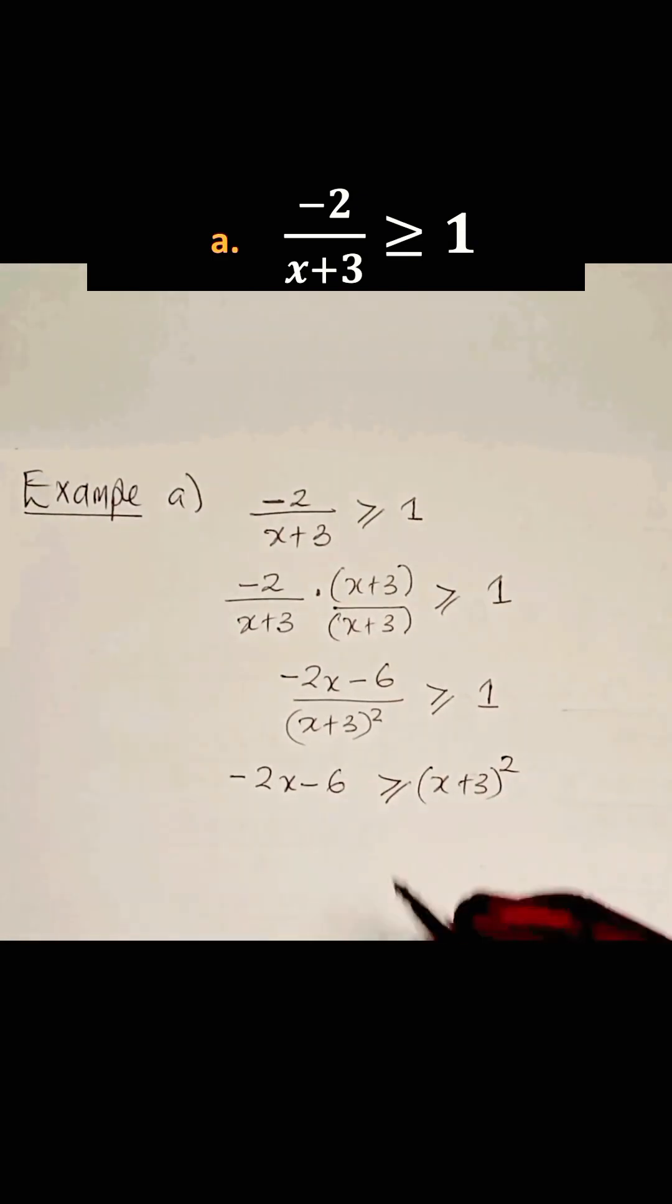We can expand the right hand side. So we have -2x - 6 is greater or equal to x² + 6x + 9.